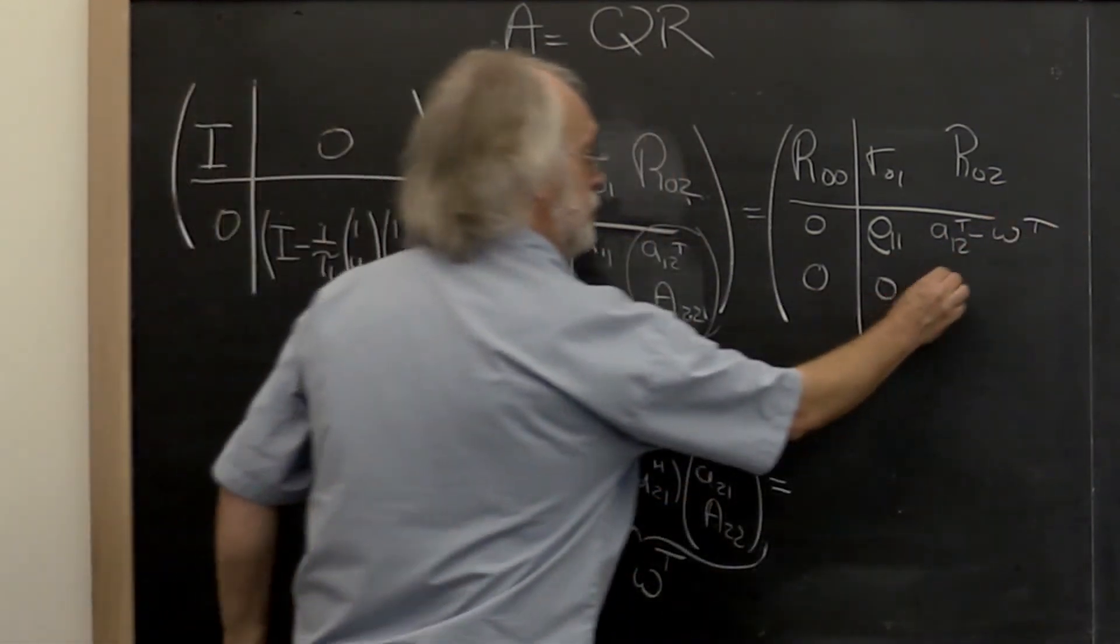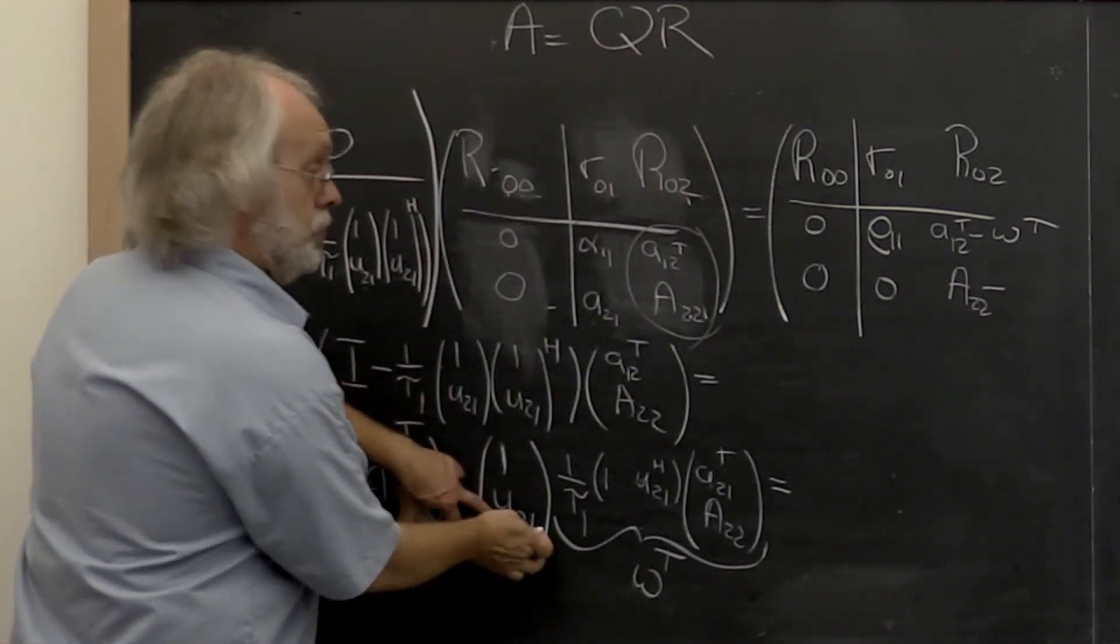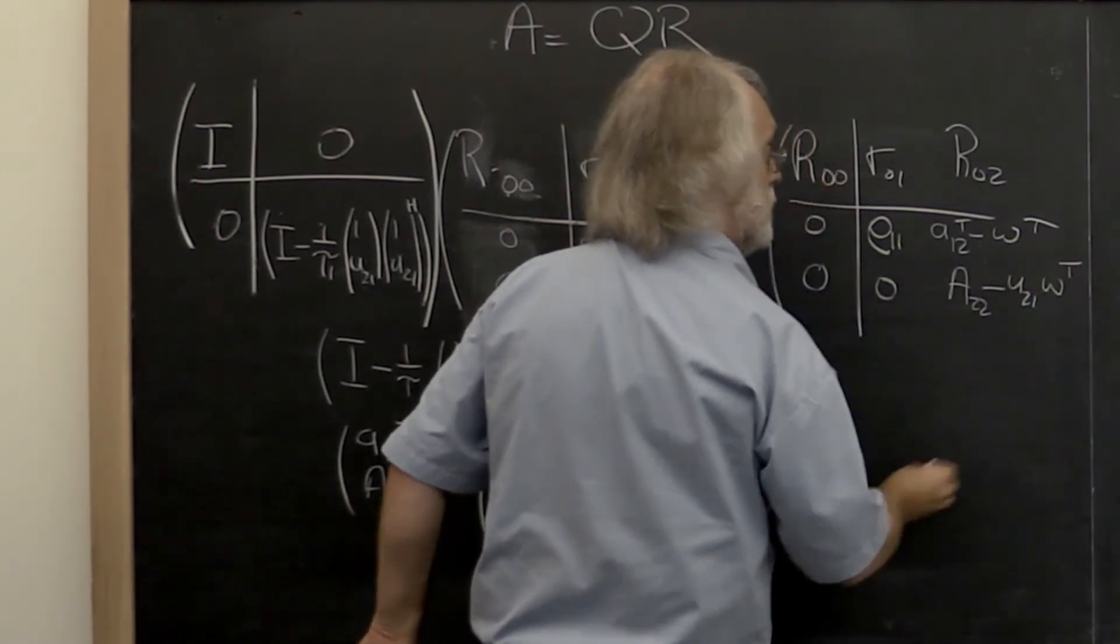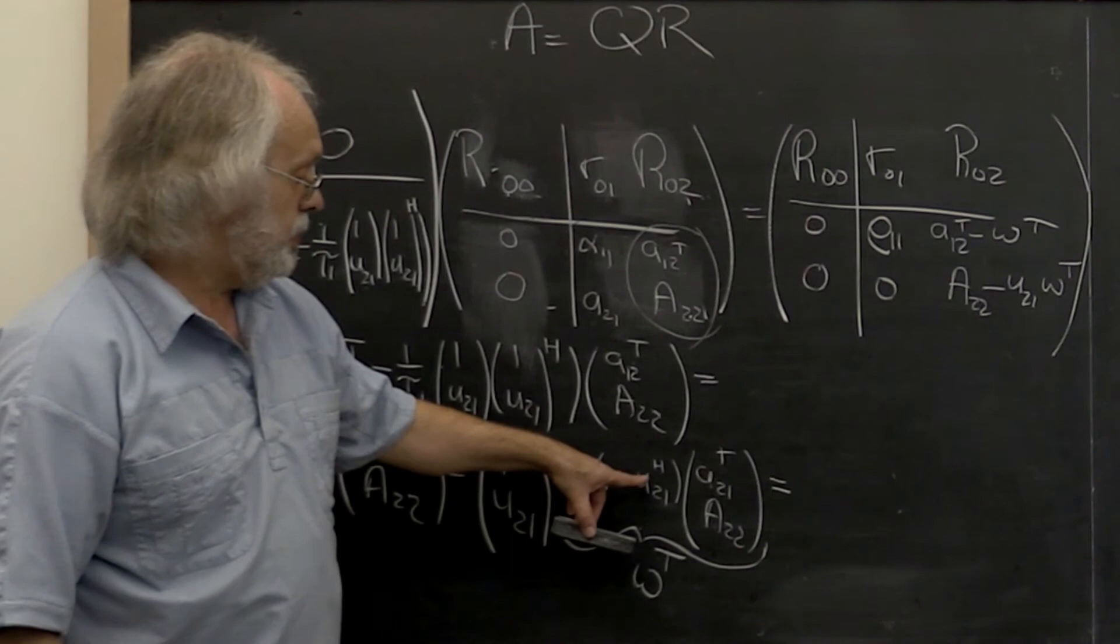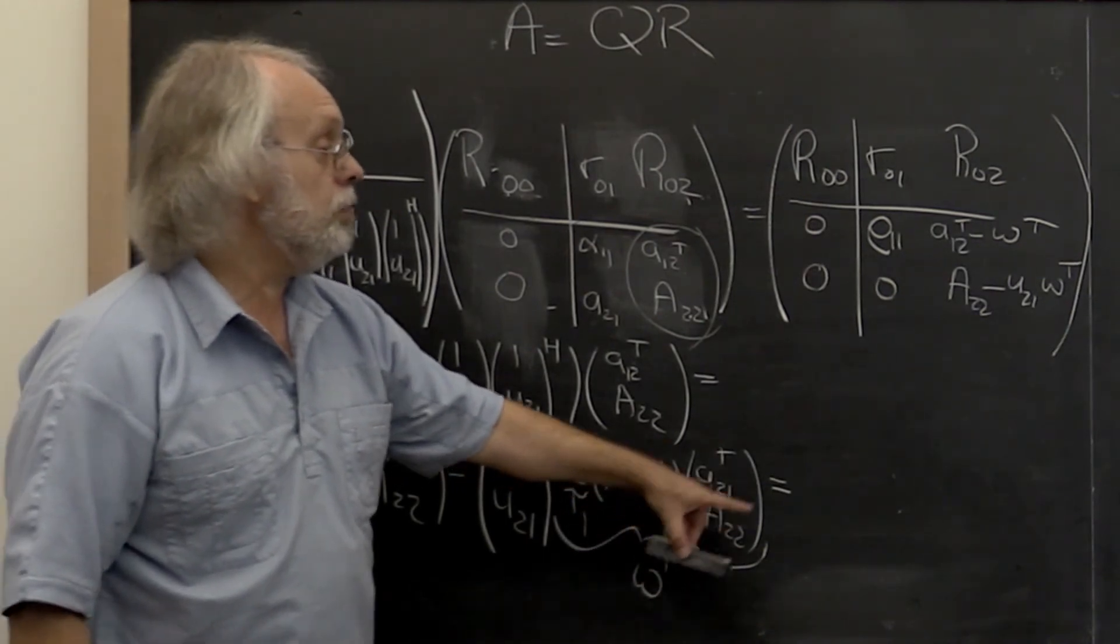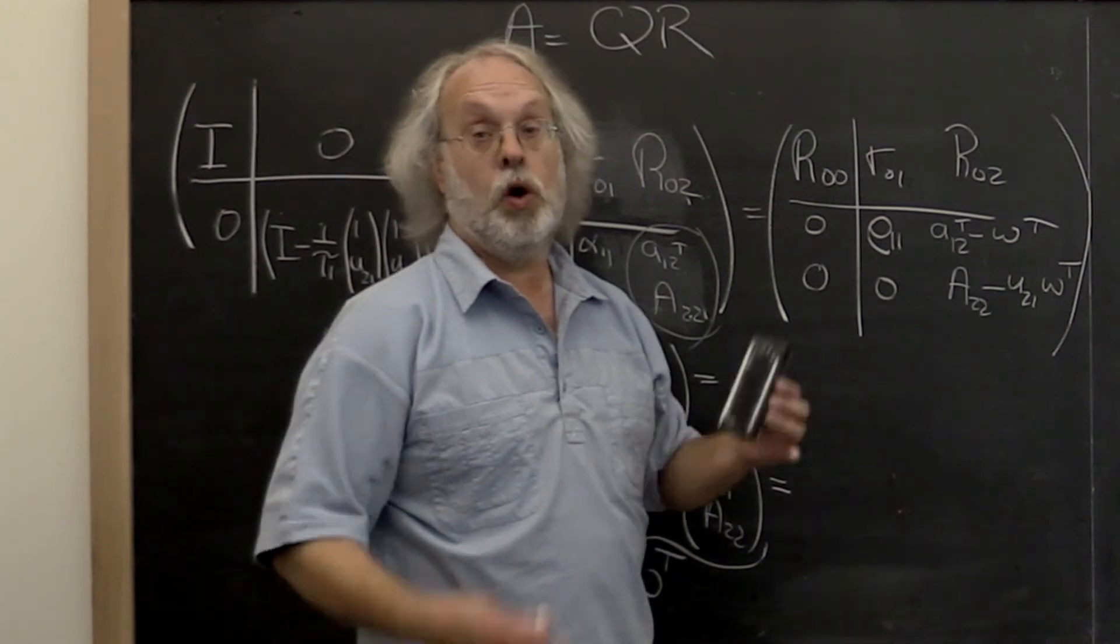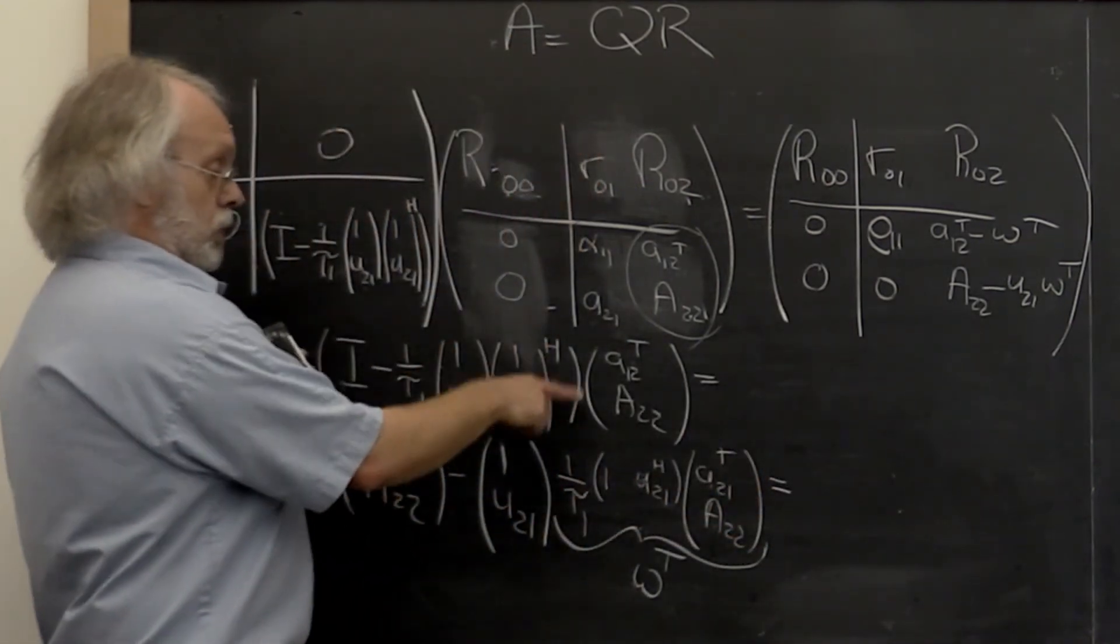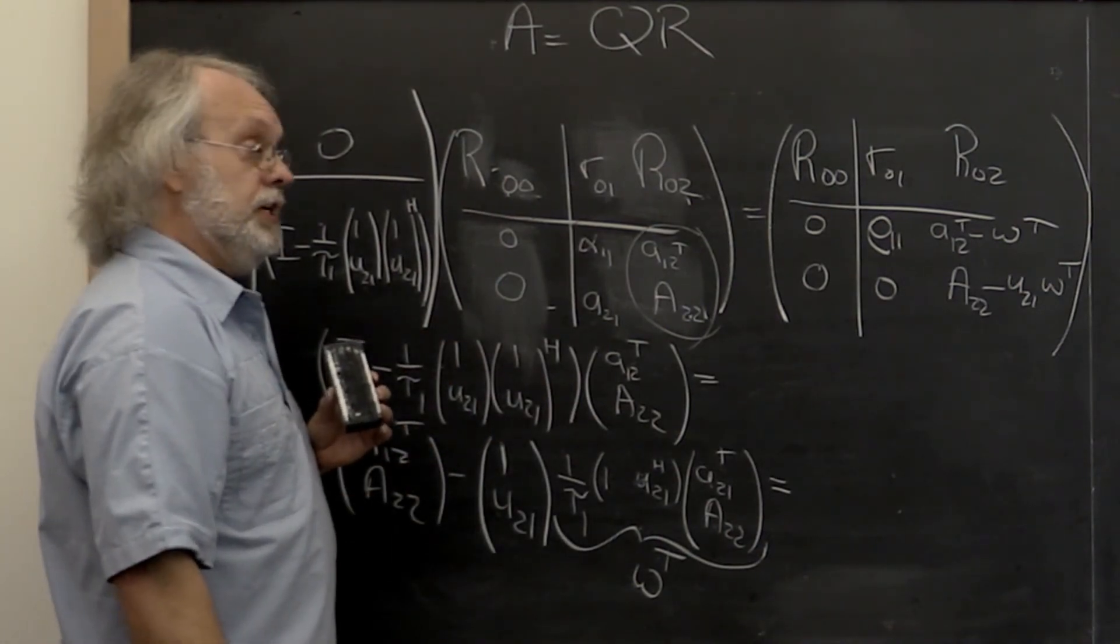And then a22 minus u21, which is a column vector, times w transpose, which is a row vector. And what we see is that most of the computation is in a row times matrix multiply and a rank-1 update, which is a whole lot cheaper than doing a matrix-matrix multiply, which is what we would have had to do if we explicitly formed this particular matrix.